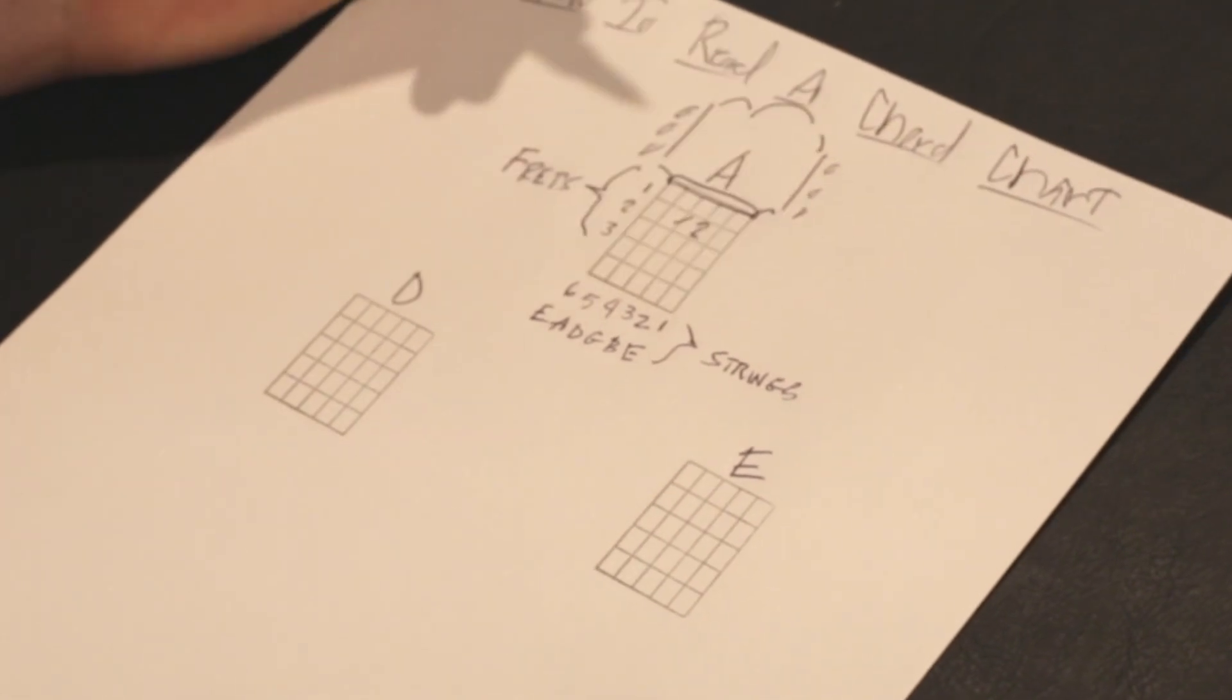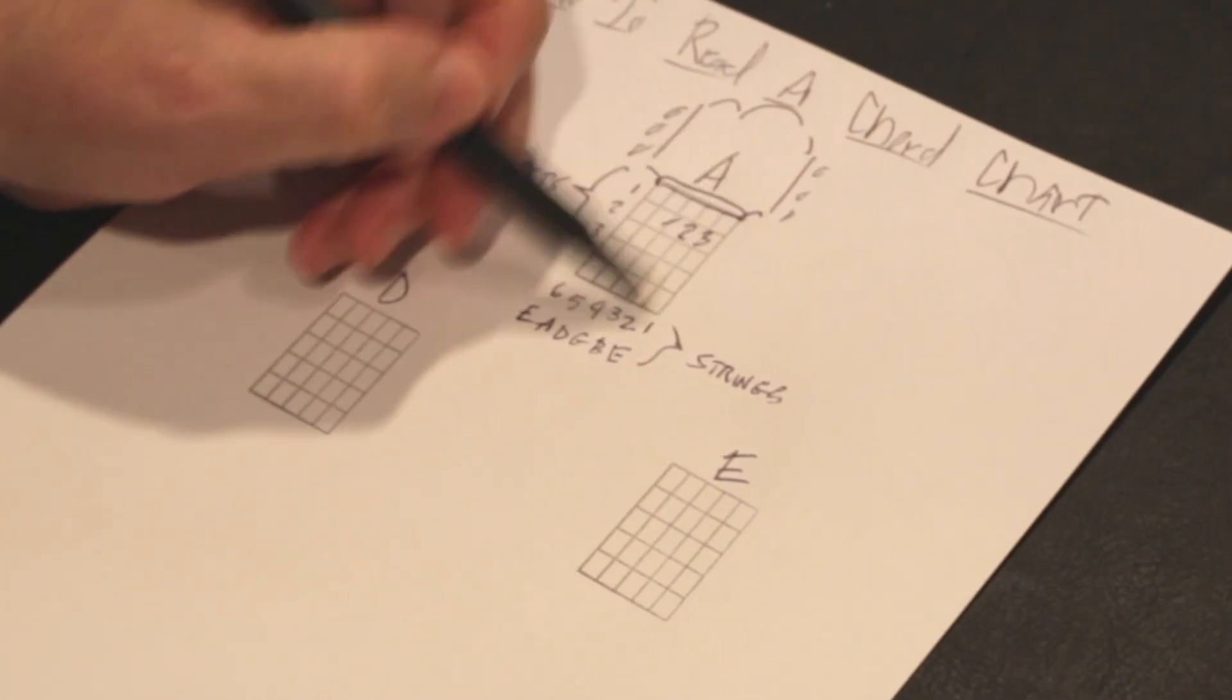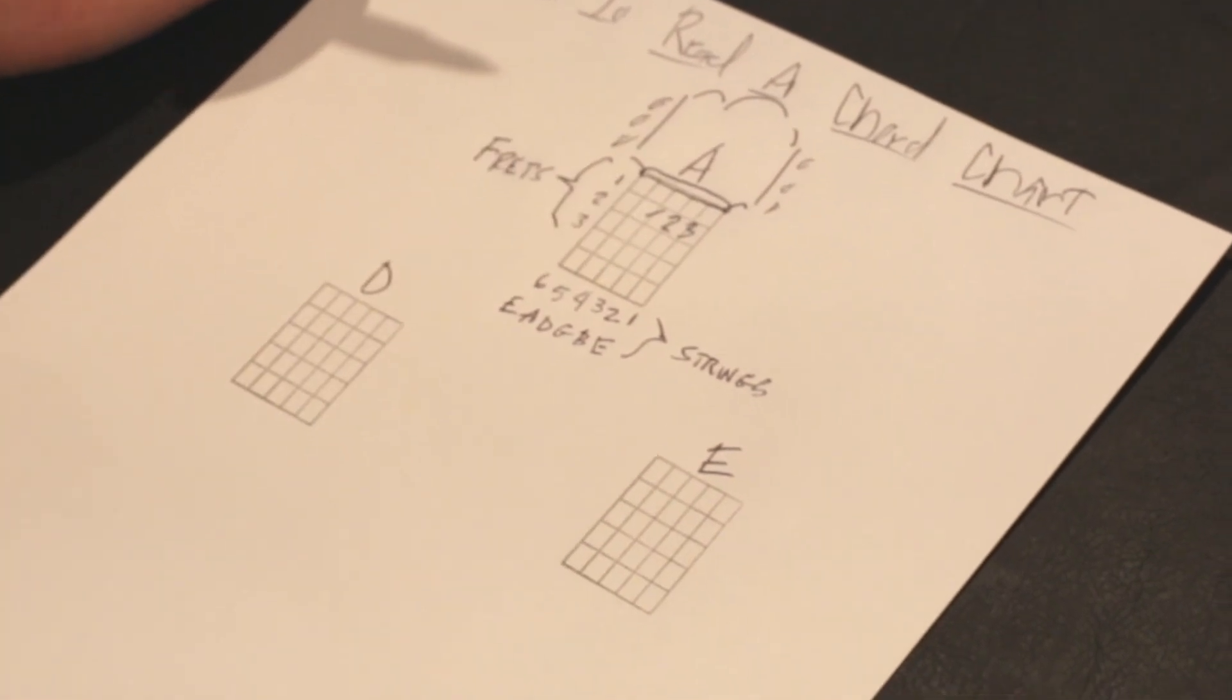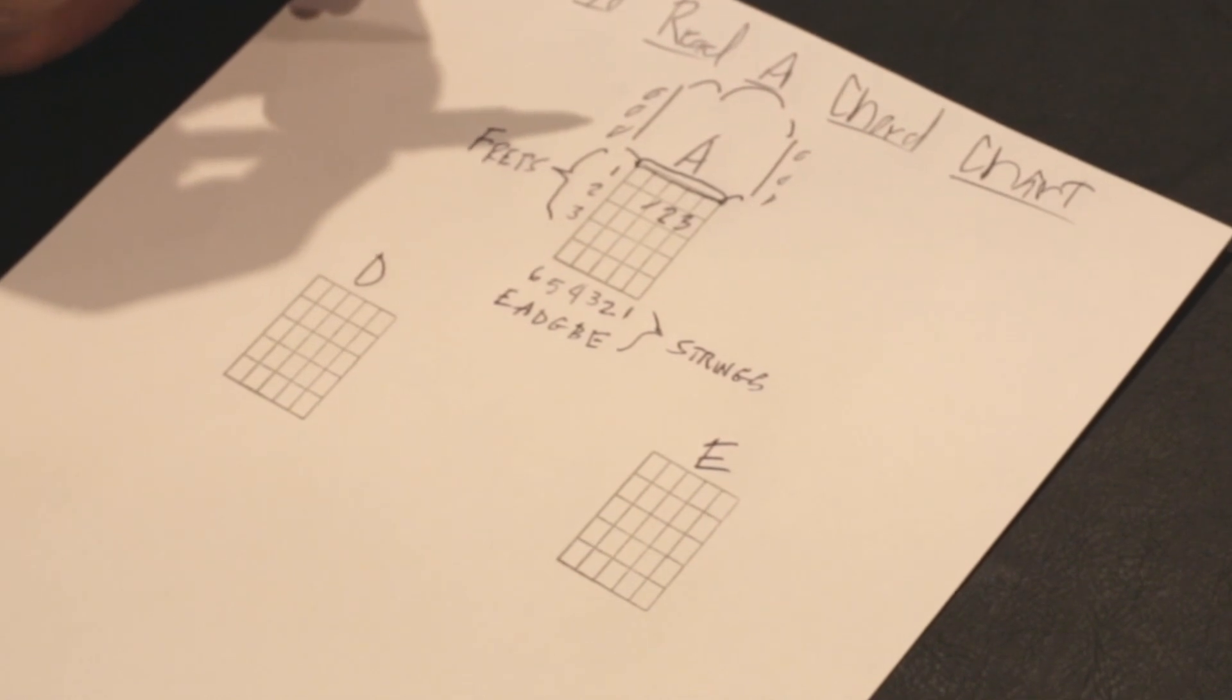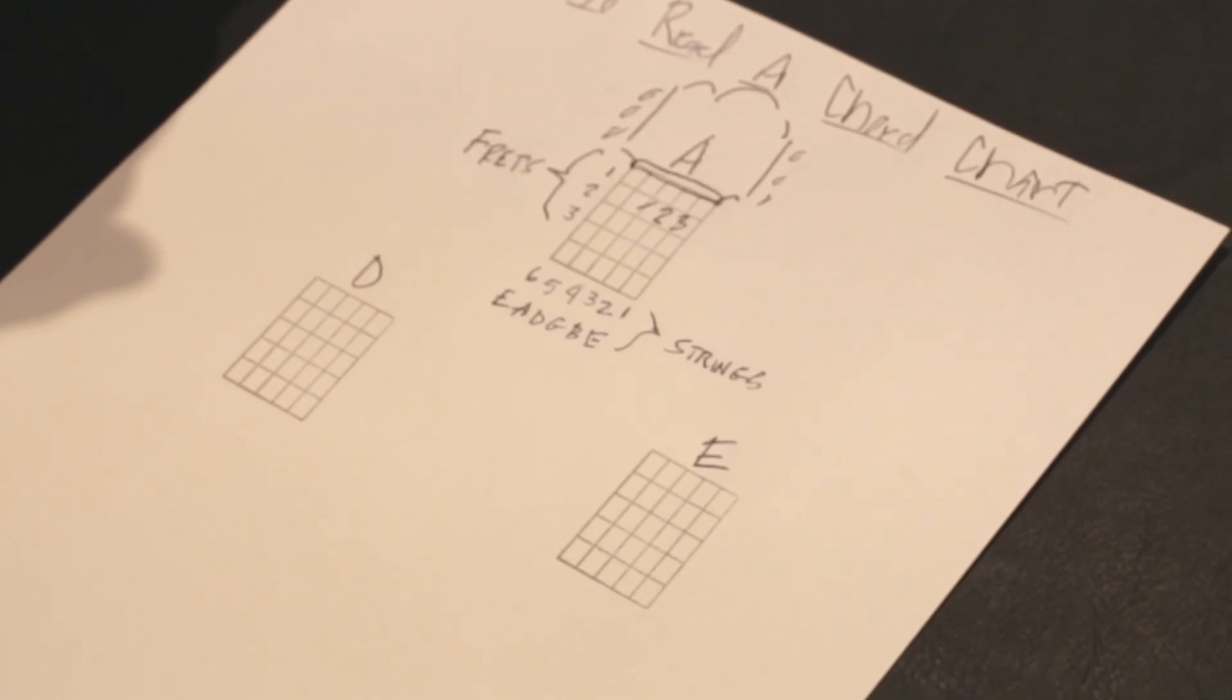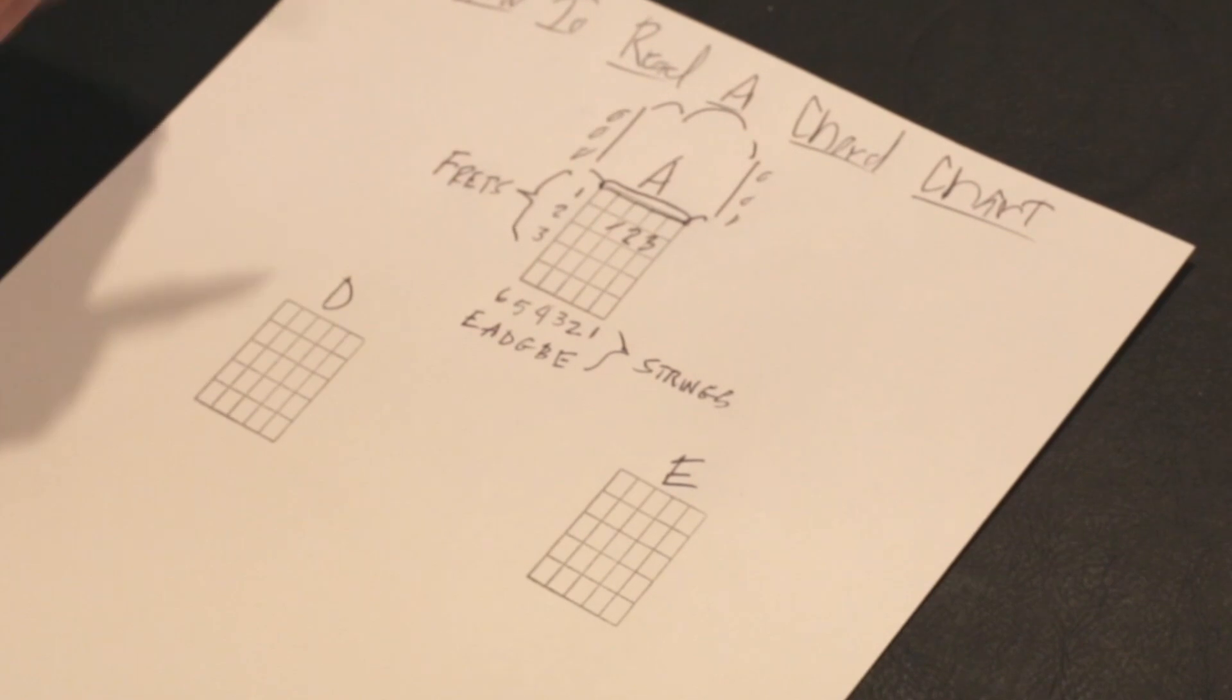Then this one is going to be second fret, one, two, three, third string. And this one's going to be second string, second fret. So one, two, three. That's how my A chord is shaped. And if you look at my video, you can see where I put my fingers on there. And this is how you can read a chord chart. So you'll know from then on how it works. So you can pull up tons of these chord charts for all these different chords that we're going to be going over.